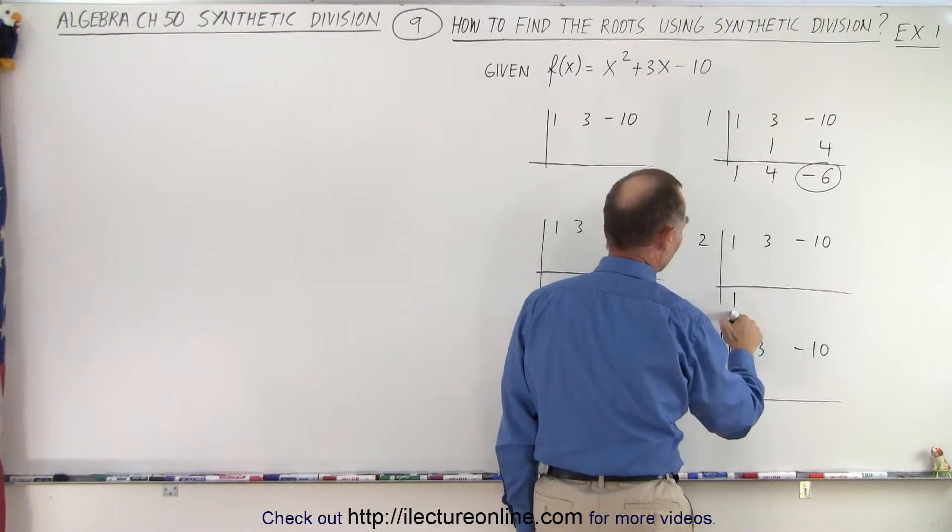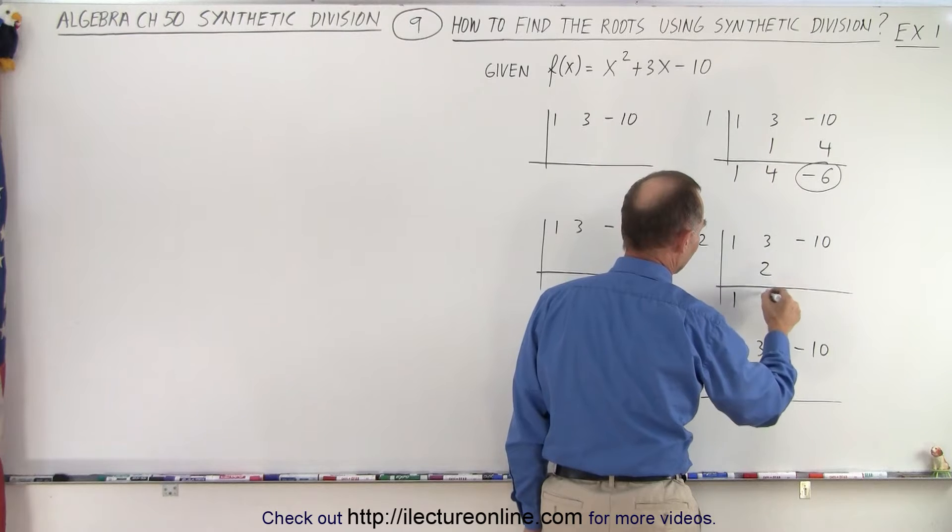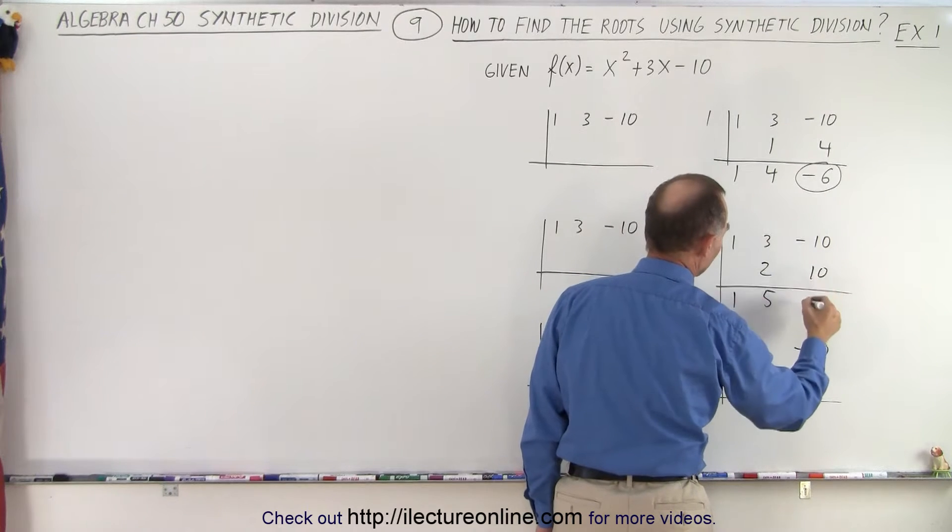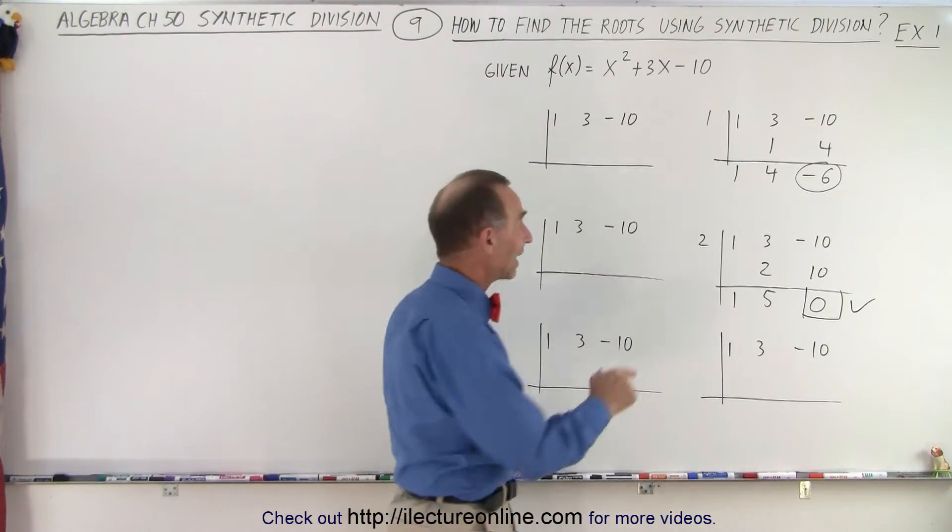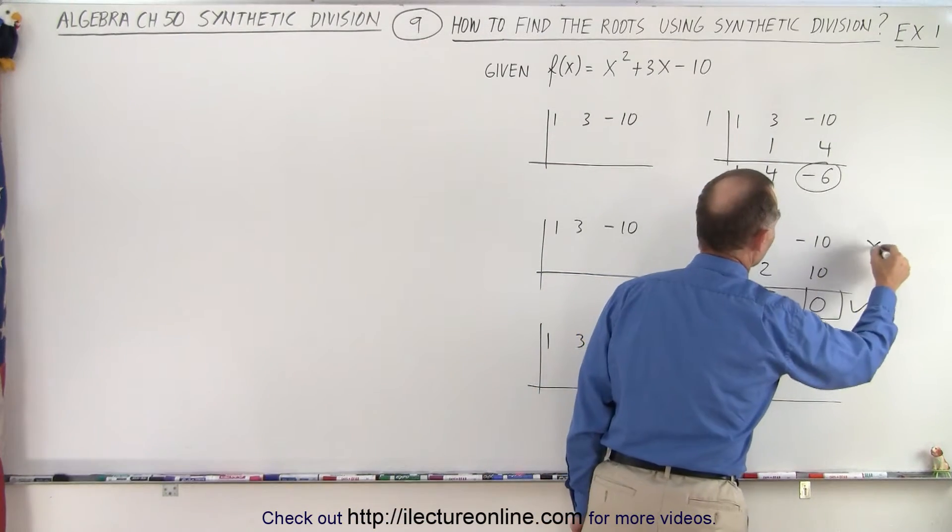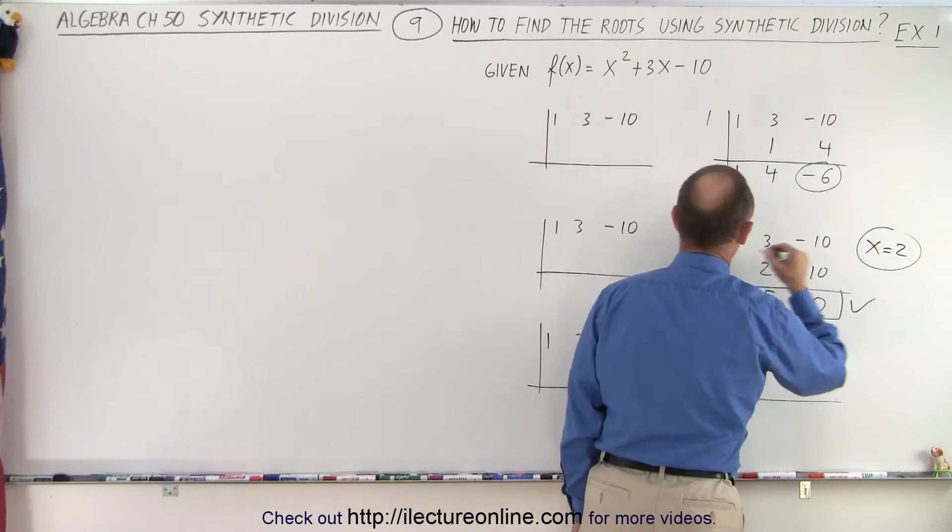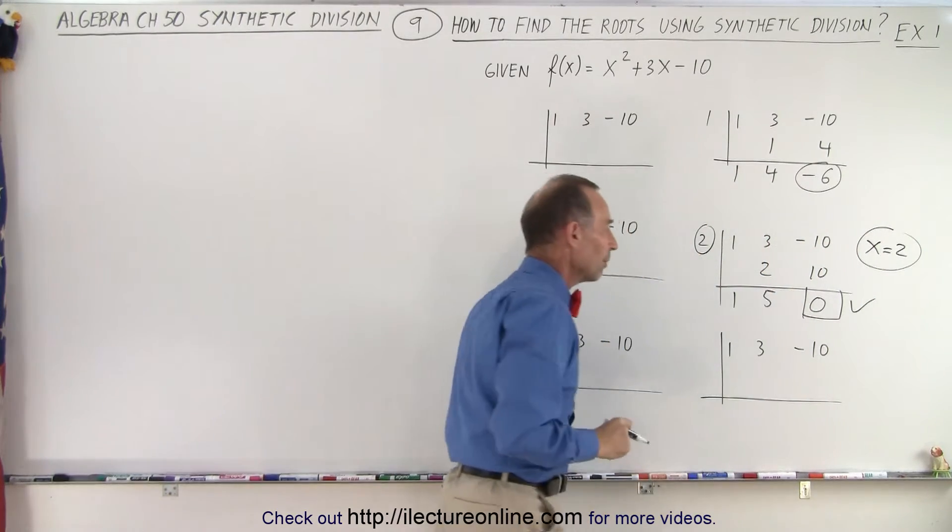And I drop down the 1. 2 times 1 is 2. Add them together, I get 5. 2 times 5, I get 10. Add them together, I get 0. Wow, there we go. Our first root, that is when x equals 2. So when x equals 2, I have a root because the remainder is 0.